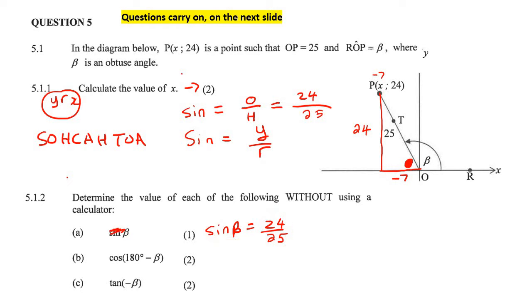If the question said find beta, then we can start looking for angles and stuff. That catches a lot of students up.